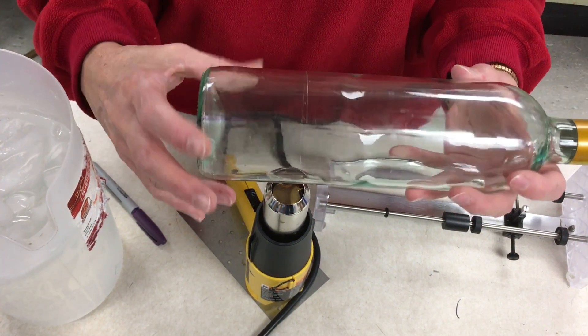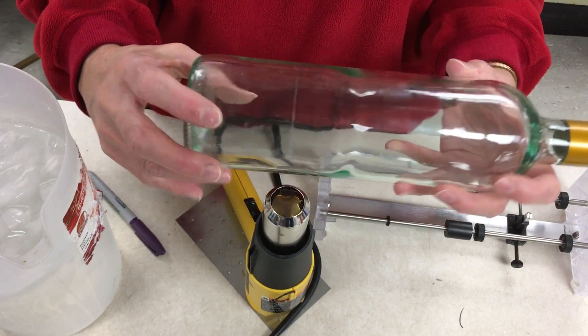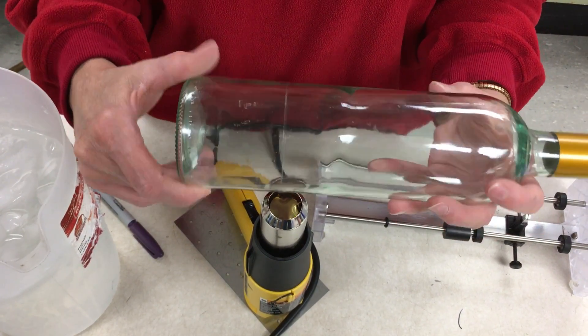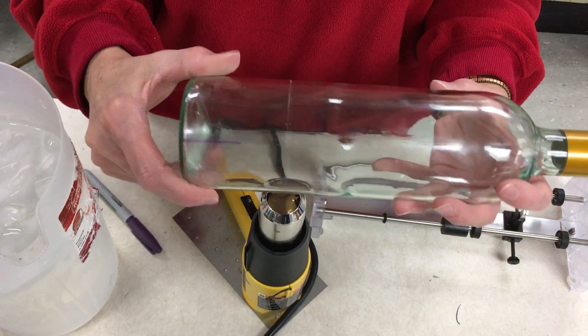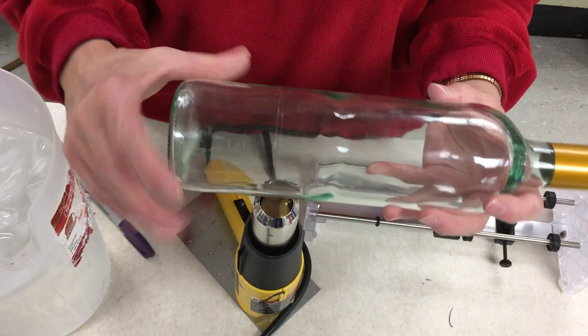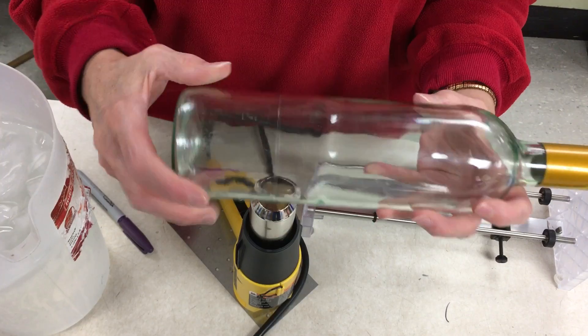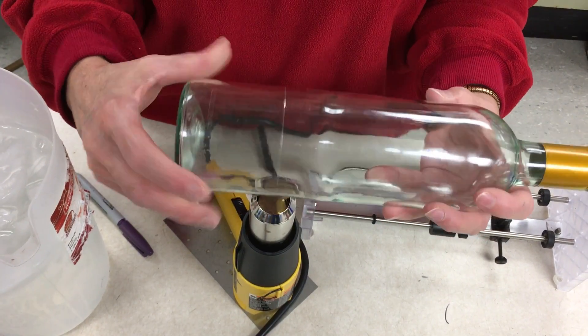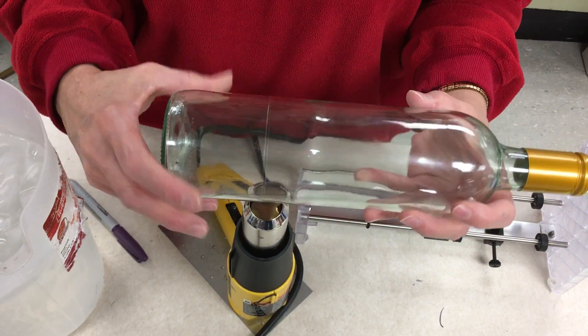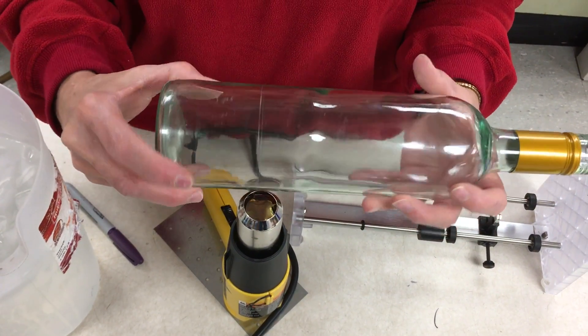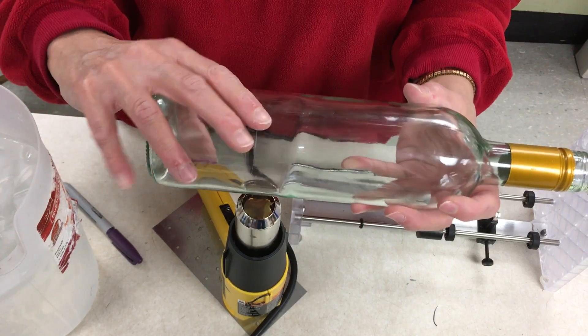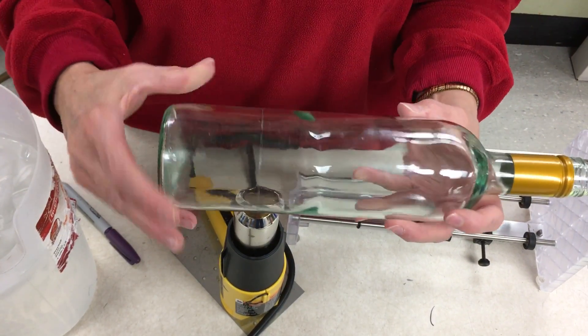We're constantly rotating the bottle just to get an even heat, and then you just touch it with your fingers to see if it's too hot or not. It's getting close.